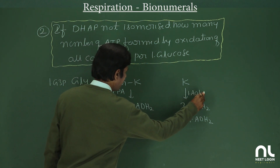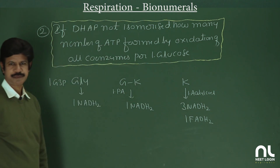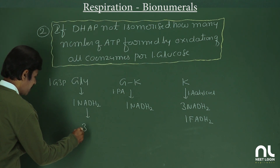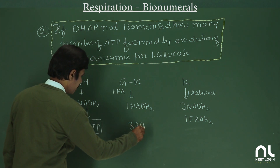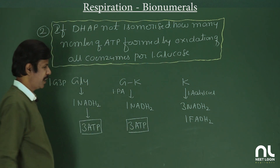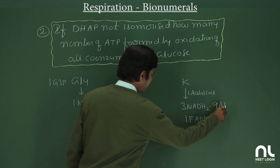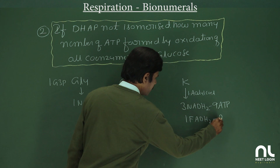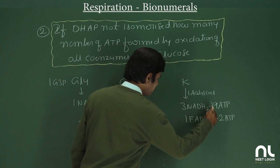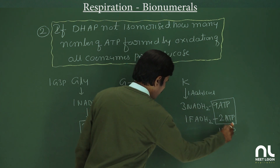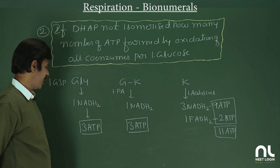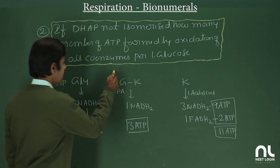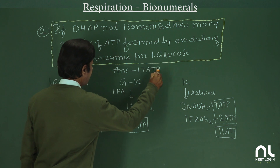For one pyruvic acid forming one acetyl coenzyme A: the NADH from glycolysis on oxidation gives 3 ATP; the link reaction NADH gives 3 ATP; the 3 NADH from Krebs gives 9 ATP; and the 1 FADH2 gives 2 ATP. So total from co-enzymes is 3 + 3 + 9 + 2 = 17 ATP.